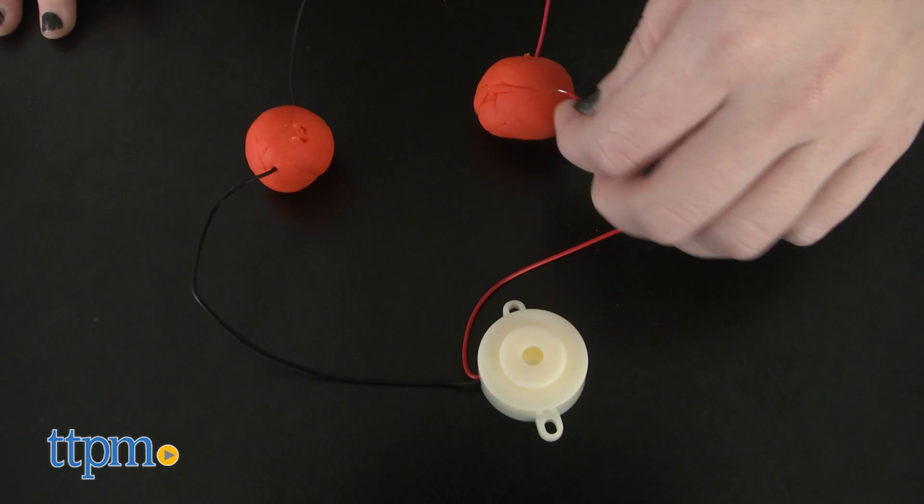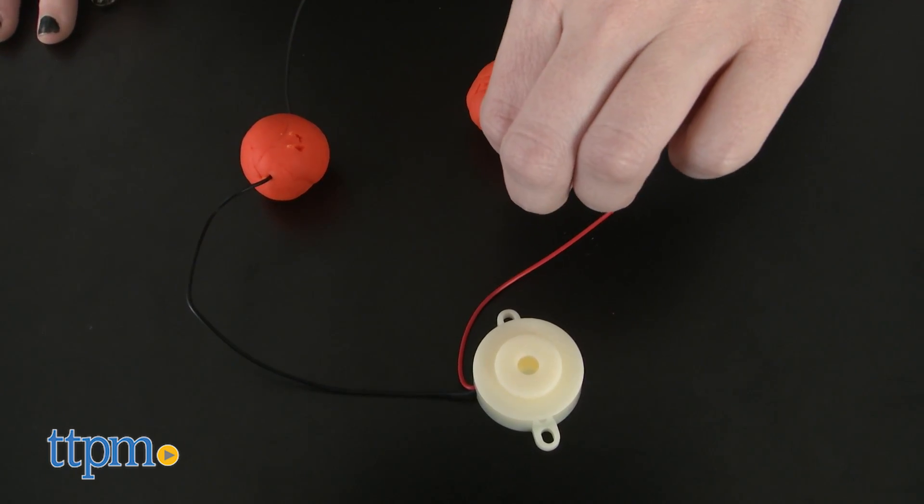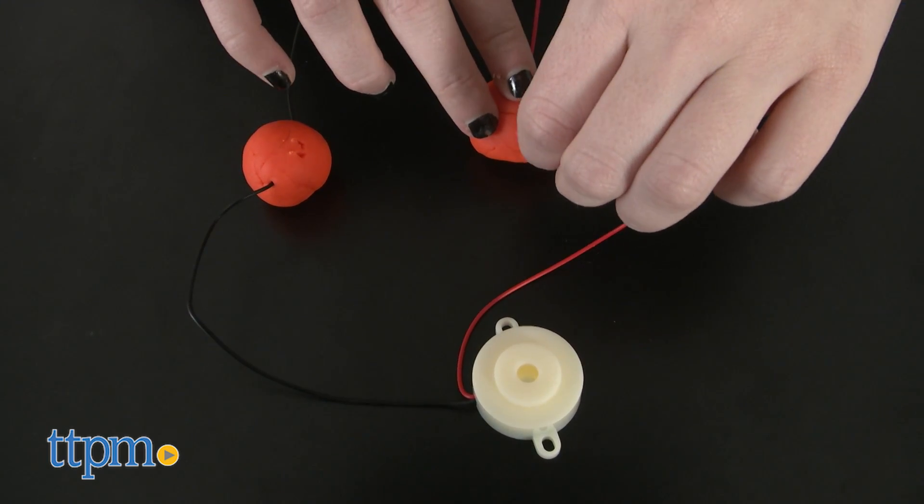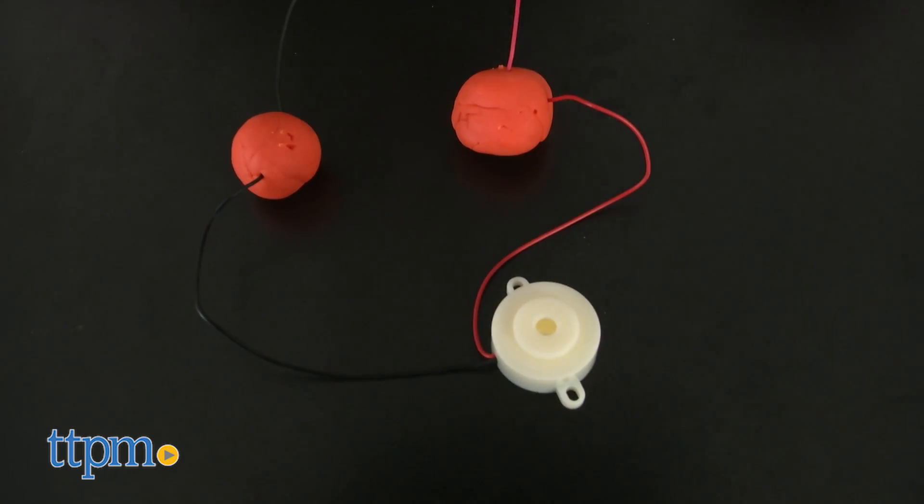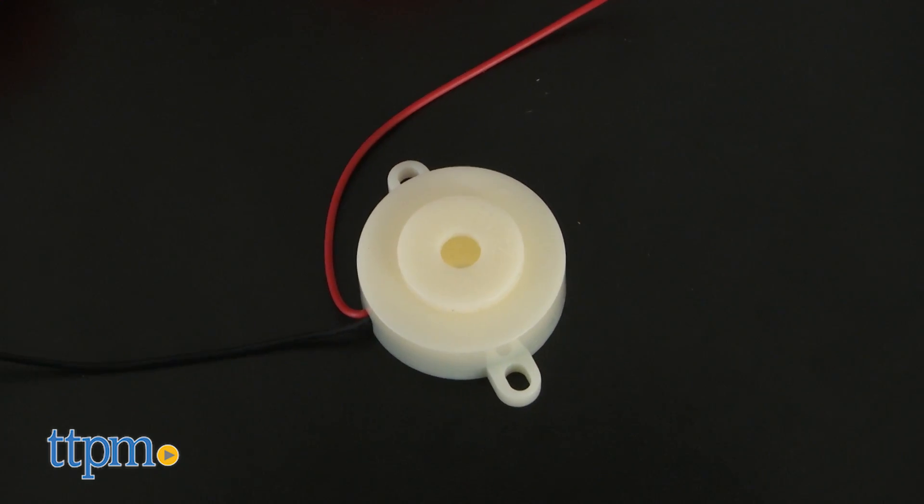In fact, parents can even sign their child up to receive weekly updated projects. The Tech Will Save Us Electro-Dough Kit is for ages 4 and up. Additional more in-depth Tech Will Save Us Electro-Dough Kits are also available and they are sold separately.